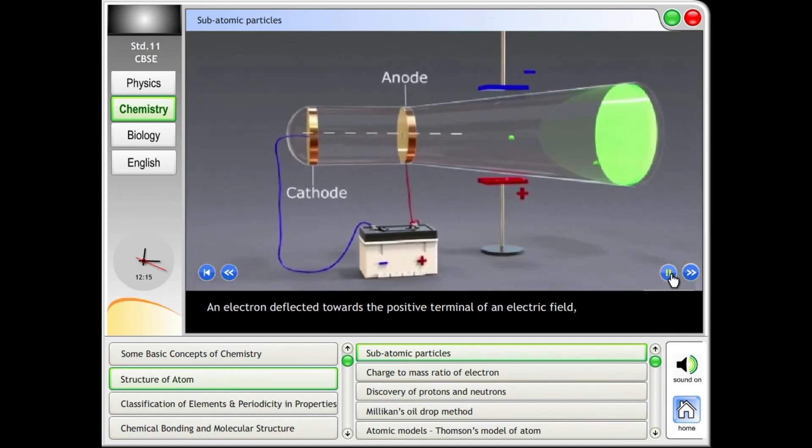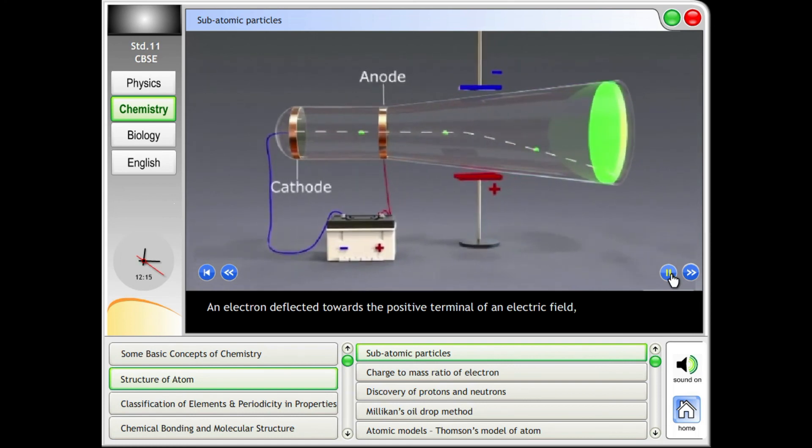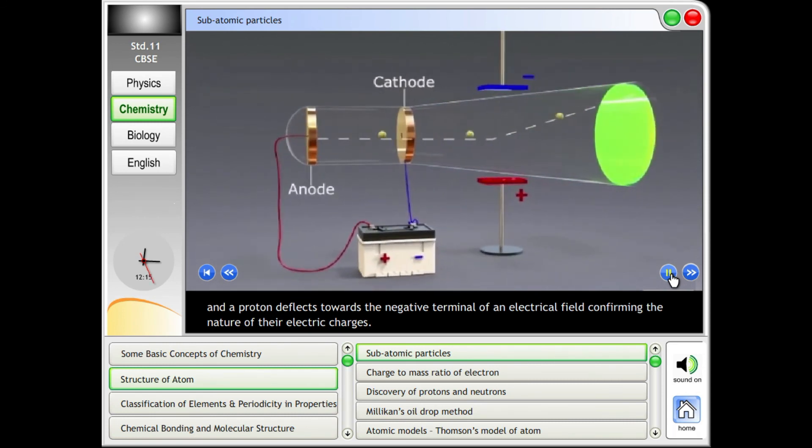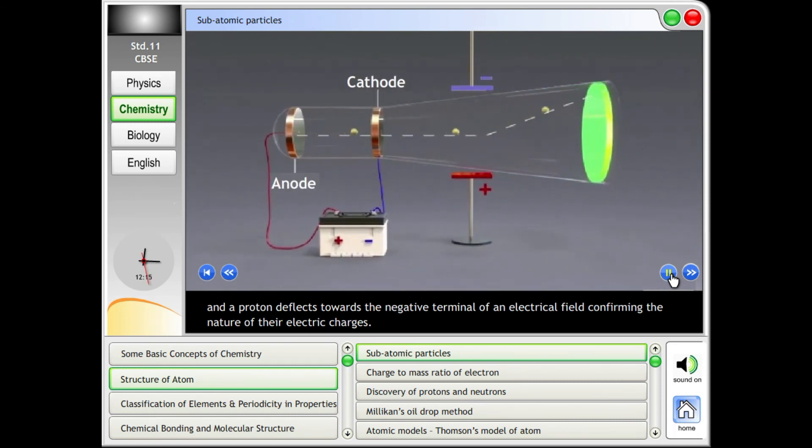An electron deflects towards the positive terminal of an electric field, and a proton deflects towards the negative terminal of an electrical field, confirming the nature of their electric charge.